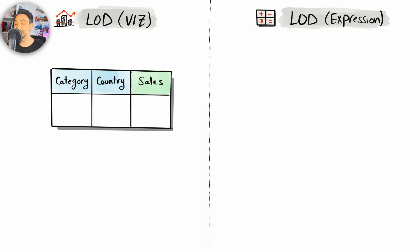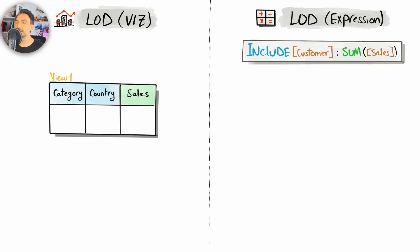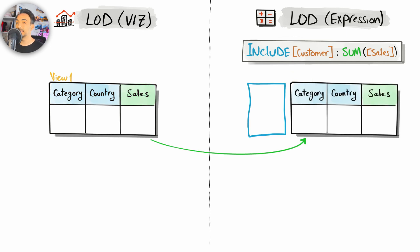Now let's move to the INCLUDE function — it is exactly the opposite of EXCLUDE. We have the same example in the visualizations with two dimensions, category and country. We're going to tell Tableau to include the customer dimension with the same aggregation — the sum of sales. This tells Tableau to add one more dimension to the visualization, adding customers to the two other dimensions already present.